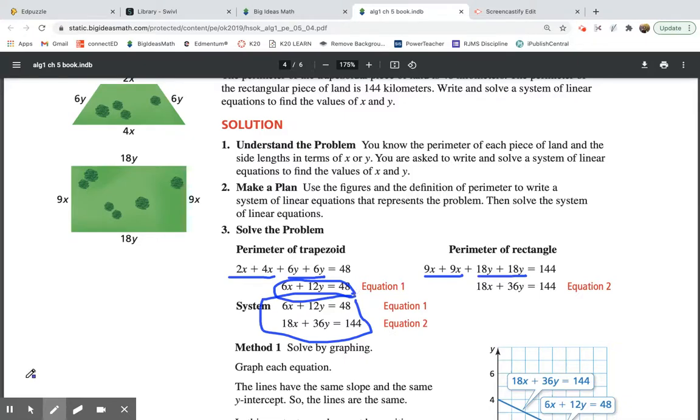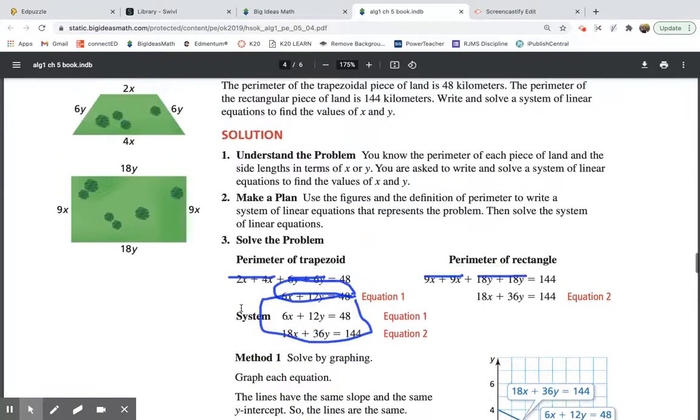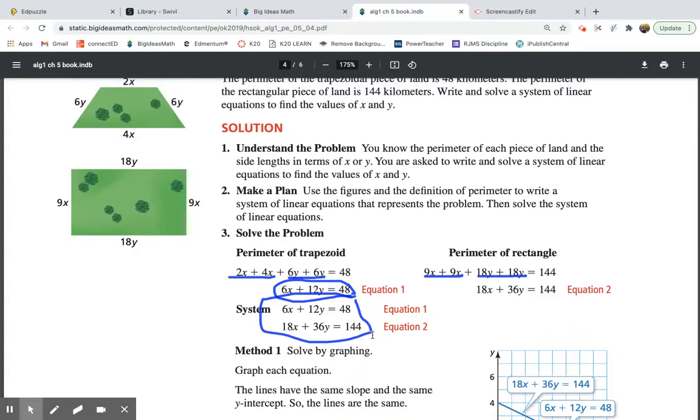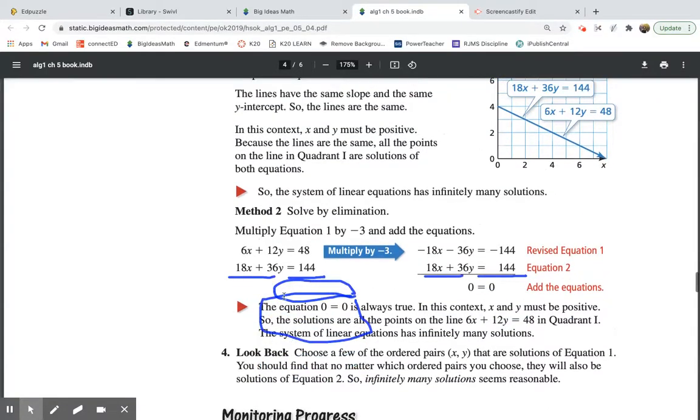So they do it two ways. They do it by graphing. Then they do it by elimination. I like by elimination on these when they're x, y, they're all lined up. Okay. So when they do it by elimination, they... Let's see. What do they do? Let me erase my stuff. They took the top equation and multiplied it by negative 3. So that way the x's could cancel. Okay. When they do that, we get negative 18x plus 18x cancels. Negative 36y plus 36y cancels. We have 0 equals. Negative 144 plus 144 also cancels. And since 0 does equal 0, the solution is infinitely many.